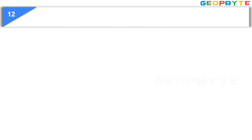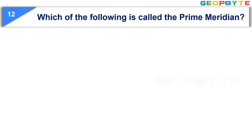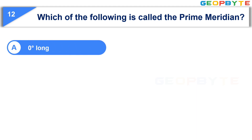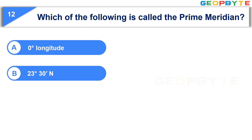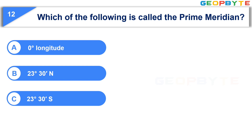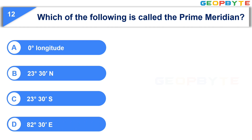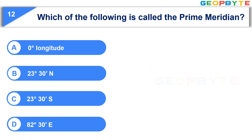The twelfth question is: which of the following is called the prime meridian? Option A: 0 degree longitude. Option B: 23 degrees 30 minutes north. Option C: 23 degrees 30 minutes south. Option D: 82 degrees 30 minutes east. Your time starts now. Your time is up and the correct answer is Option A: 0 degree longitude.